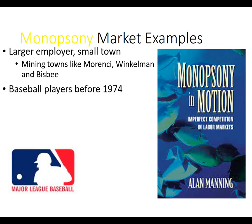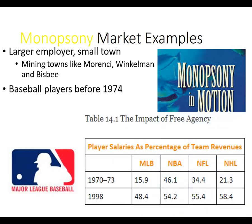Baseball players before 1974 were engaged in a monopsony environment. There was no free agency and no trades — they had to work for whoever drafted them, or they could quit playing baseball. After 1974, the baseball players won free agency and were able to choose where they go after a certain period of time. This player's salary is a percentage of team revenue. Before free agency, players only earned about 16% of team revenue — so if the team made $10 million a year, they only got $1.6 million in player salary. By 1998, they were getting close to half.